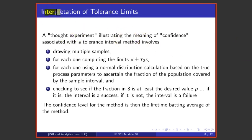Again, one needs to think through how to interpret these methods or these intervals. And the thought experiment that goes with tolerance intervals is this: You think of drawing multiple samples, for each one making the interval X-bar plus or minus tau times S. For each one, using a normal distribution calculation based on the true process parameters and seeing what fraction of the distribution is covered using that interval, and to see if that fraction is at least the desired value p. If it is, the interval is a success. If not, the interval is a failure. And the confidence level for the method is then one of these lifetime batting average things.